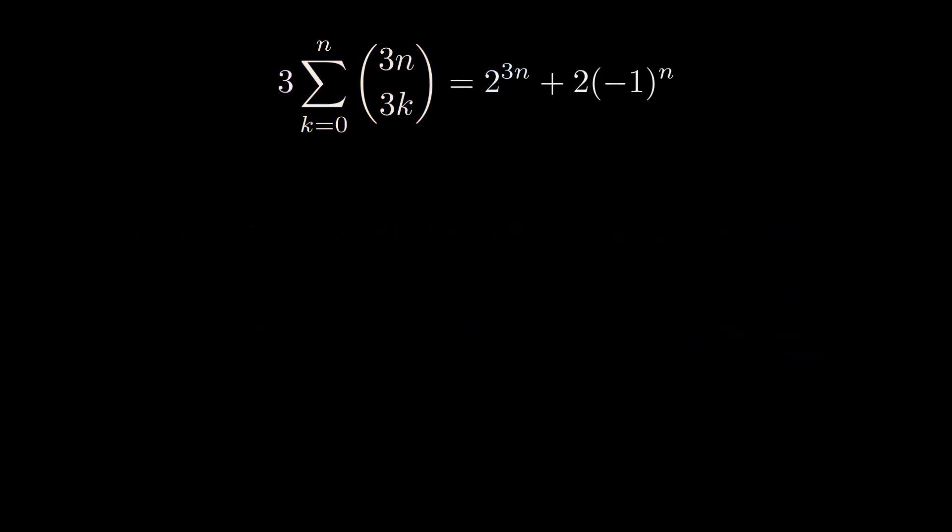By the way, for a warmup, you could pause the video and try proving the analogous two-step version of this statement. Two times the sum of 2n choose 2k is 2 to the 2n. In that one, you don't need a correction term and a bijection will do just fine.